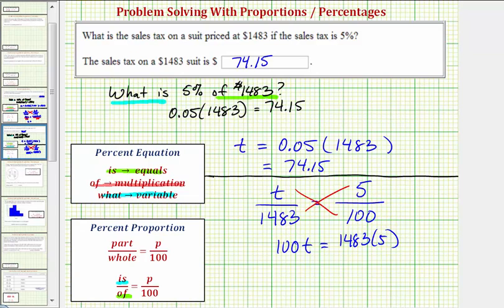And now to solve for t we divide both sides by 100. Notice on the left this simplifies to 1t or just t. Let's evaluate this on the calculator, which we know should be 74.15. Let's just verify that.